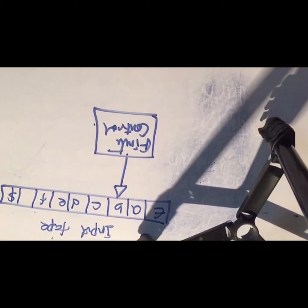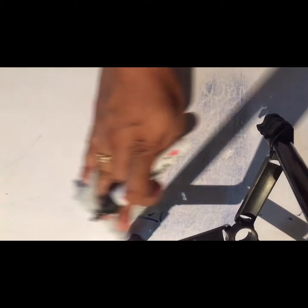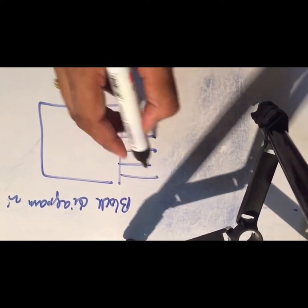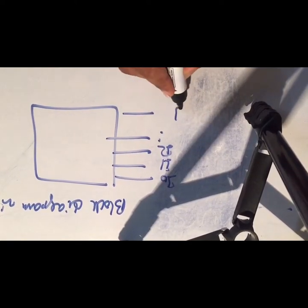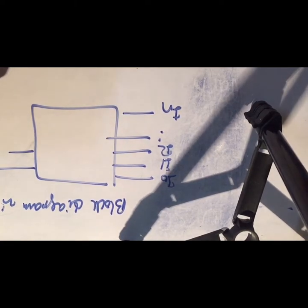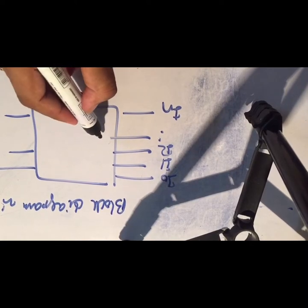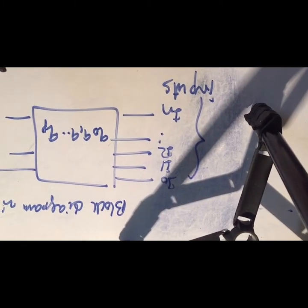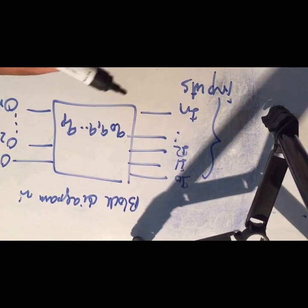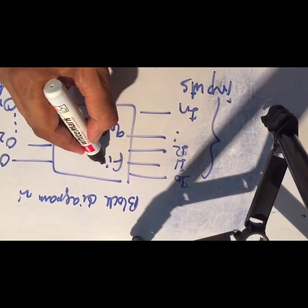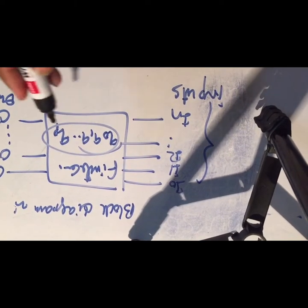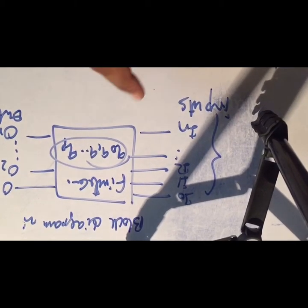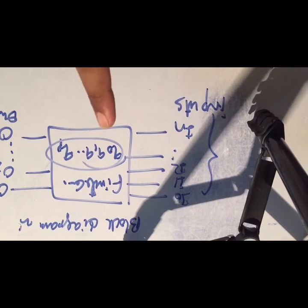Every automata consists of some states, output relations, and a block diagram. The block diagram has inputs i0, i1, i2, ..., in; outputs o0, o1, ..., om; and states q0, q1, q2, ..., qp. Input energy is transmitted to output through a finite control, and states are connected to each other by state relations. Depending on the state, some outputs are produced.